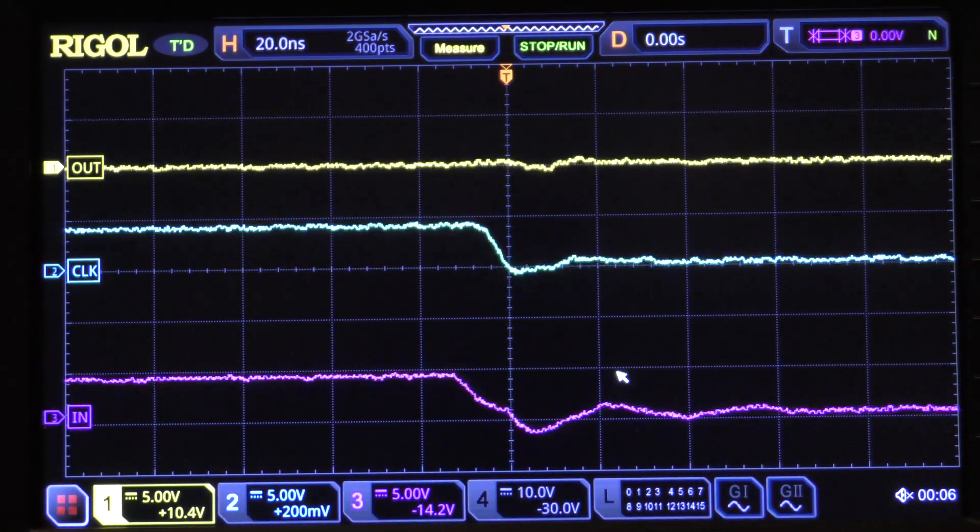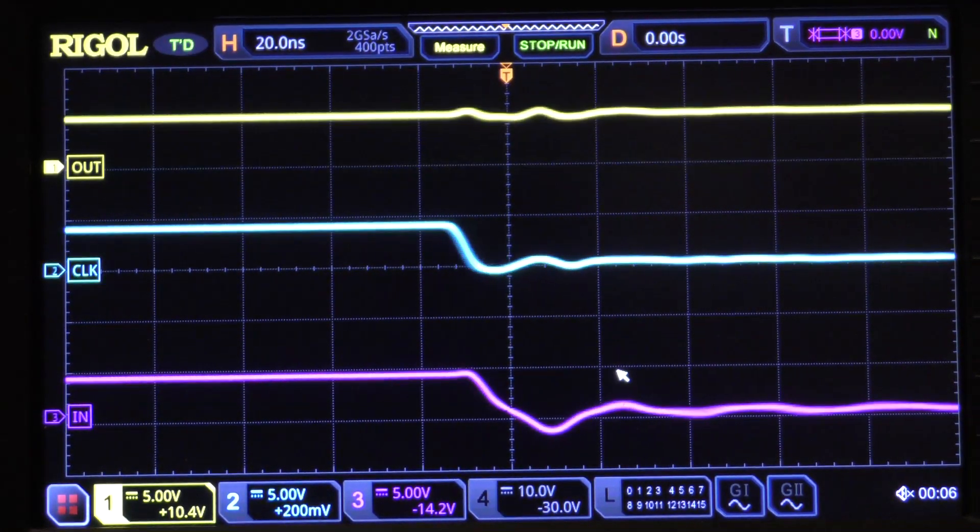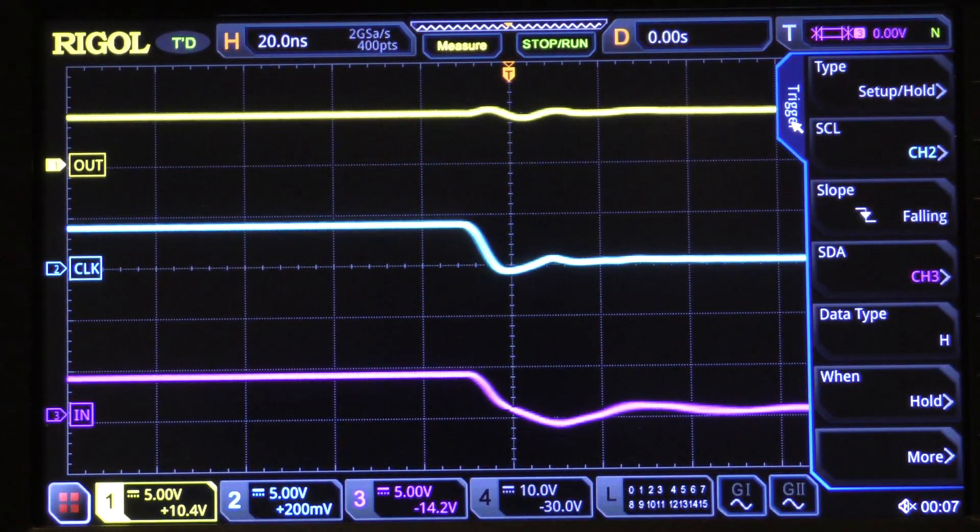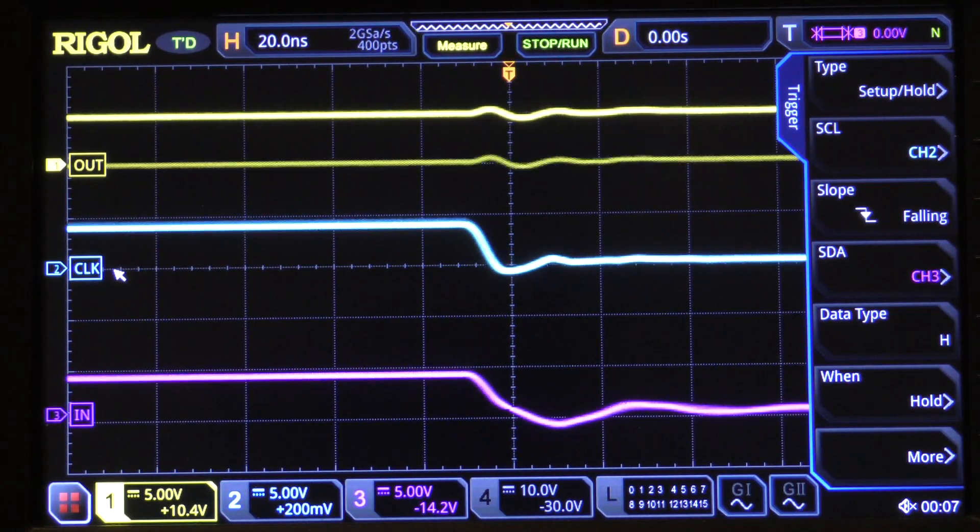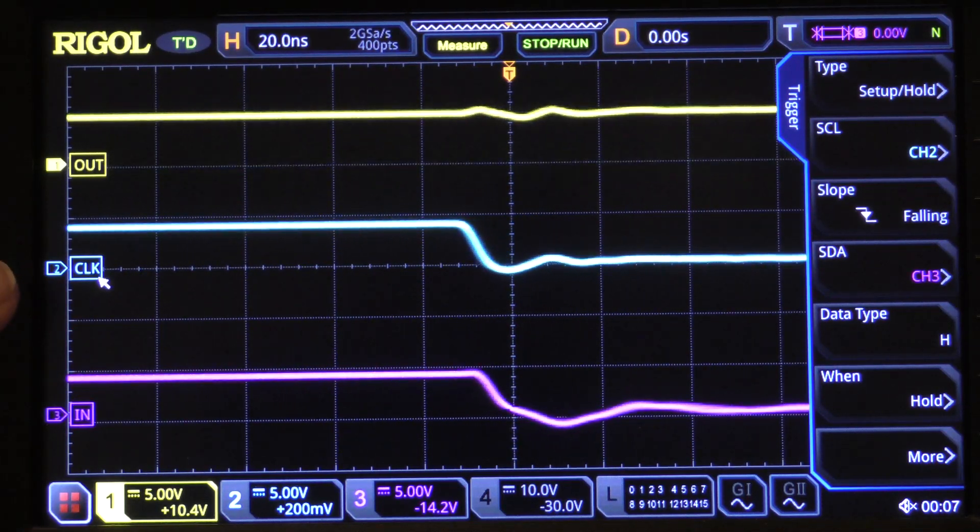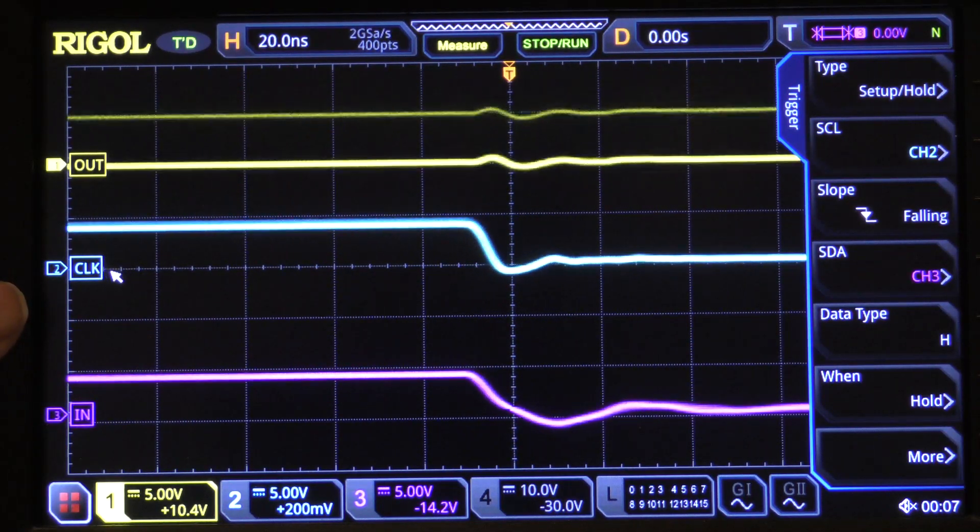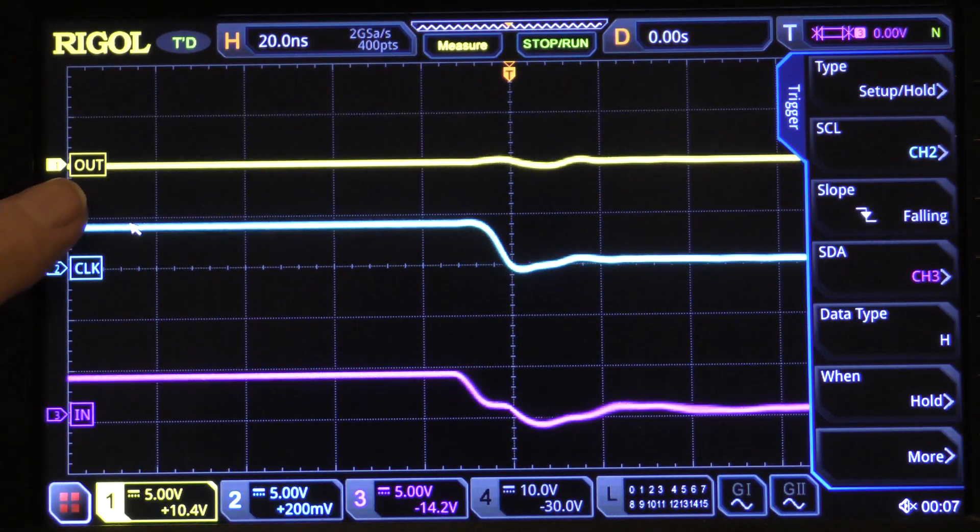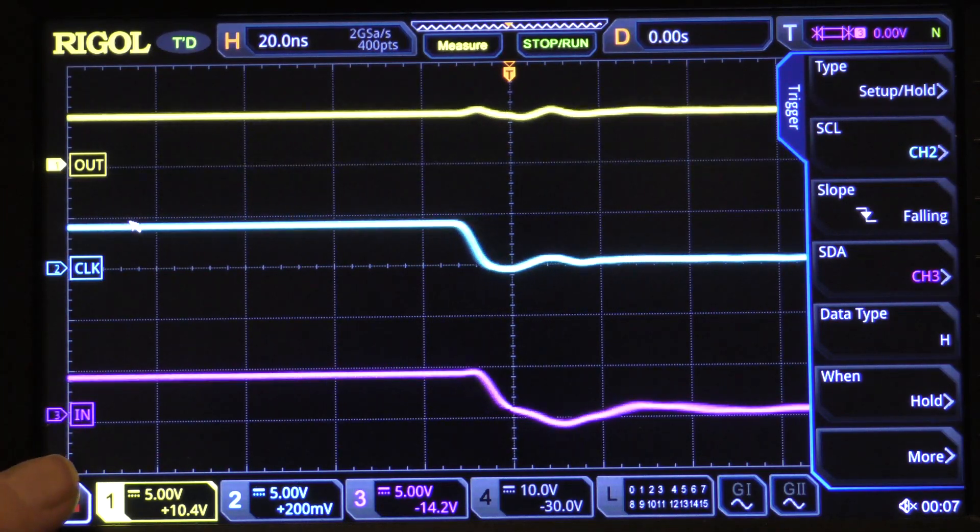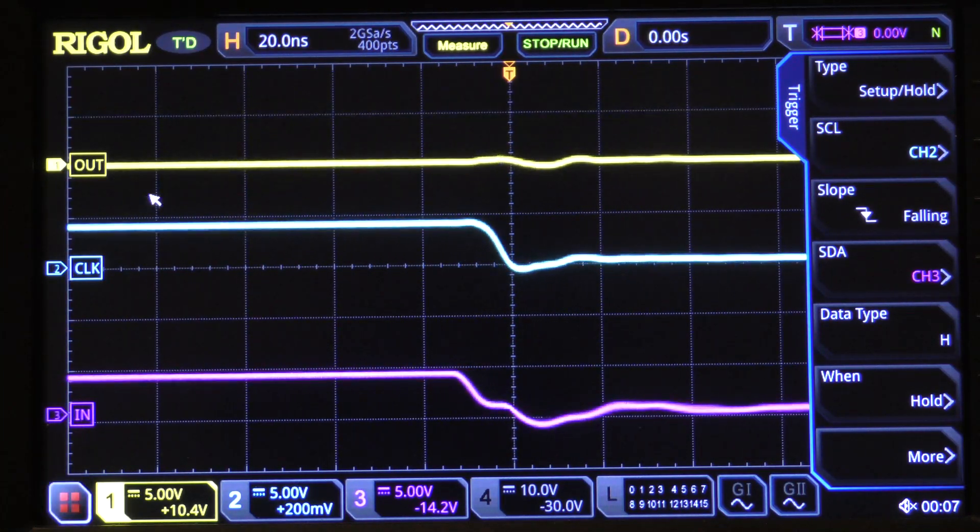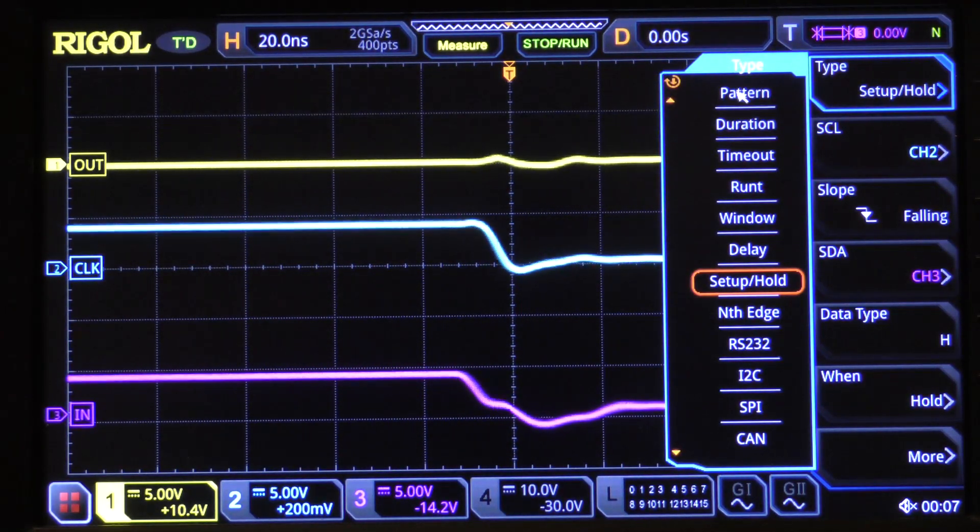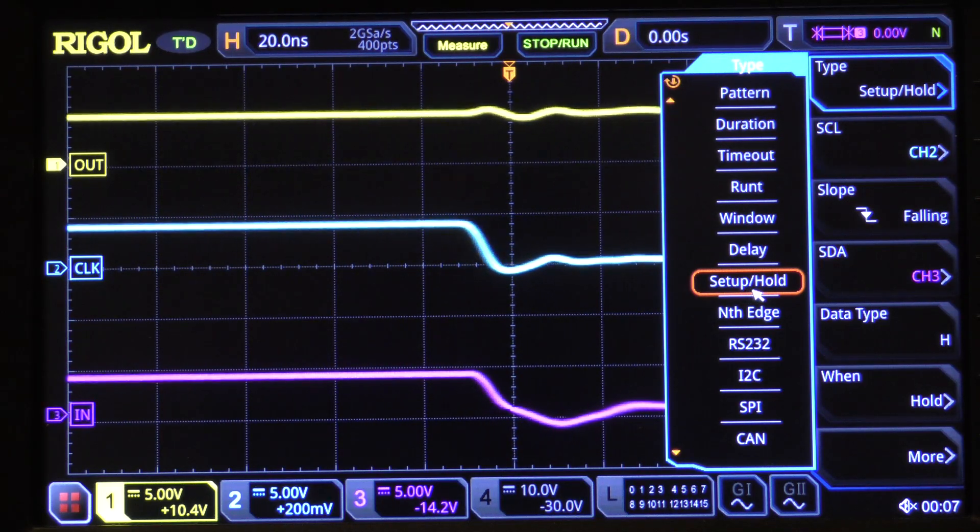So how do we set this up on an oscilloscope like the MSO5000? Well, the first thing we do is bring up the trigger menu. Now we have connected channel 2 to the clock signal. You'll notice over here it's labeled clock, and above that the Q output is labeled out and the D input is labeled in. So we go to type under the trigger menu and come down to setup and hold and click on that.